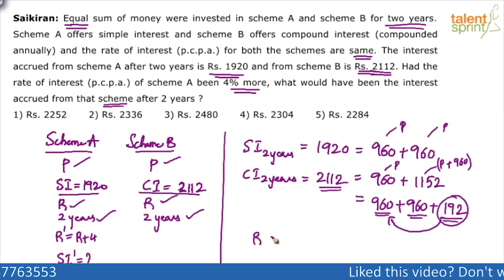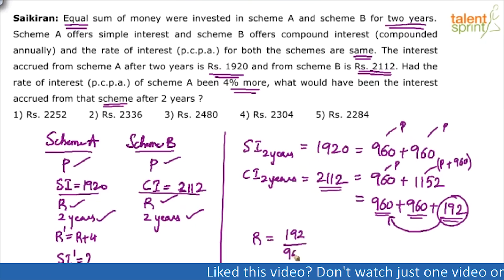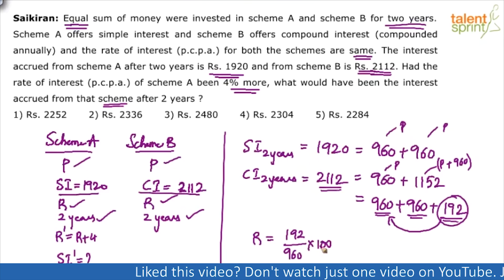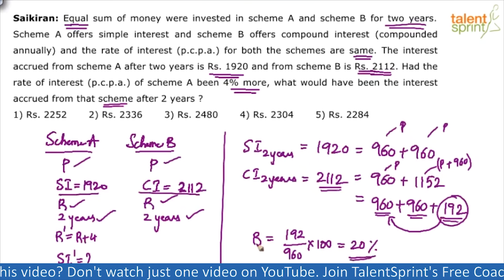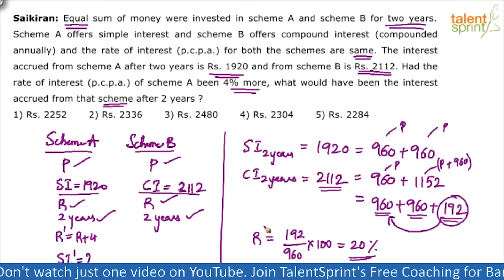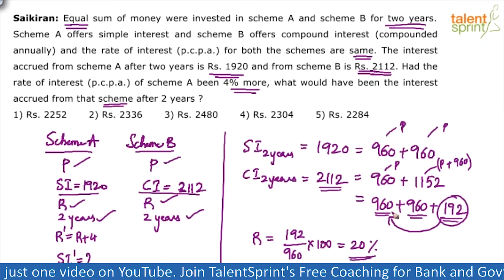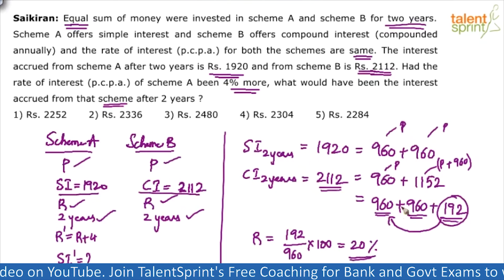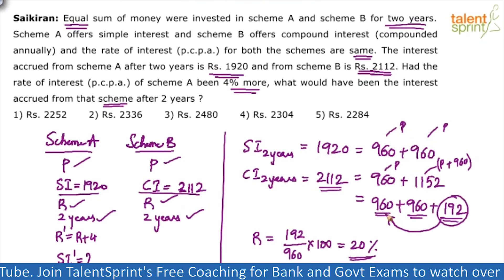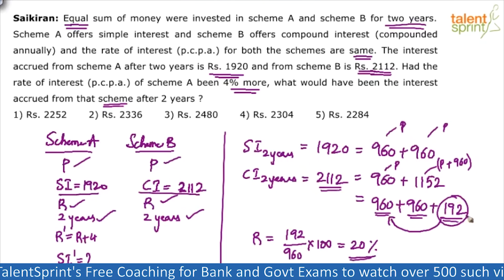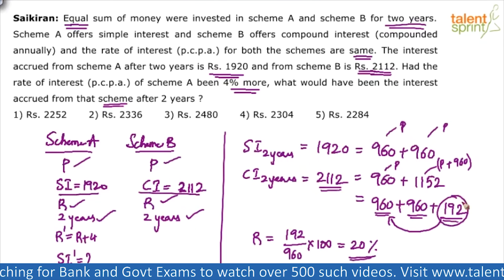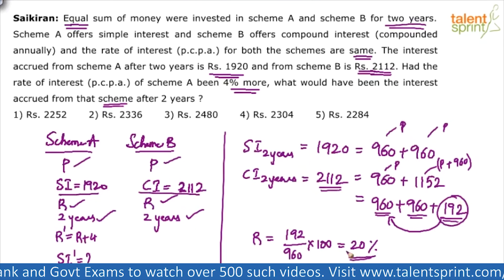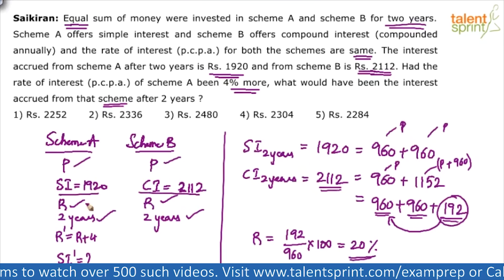So the rate of interest is 192 divided by 960 into 100, which equals 20%. The point is: 192 is what percentage of 960? 192 is 20% of 960, meaning the rate of interest is 20%. Therefore R dash will be 24%.